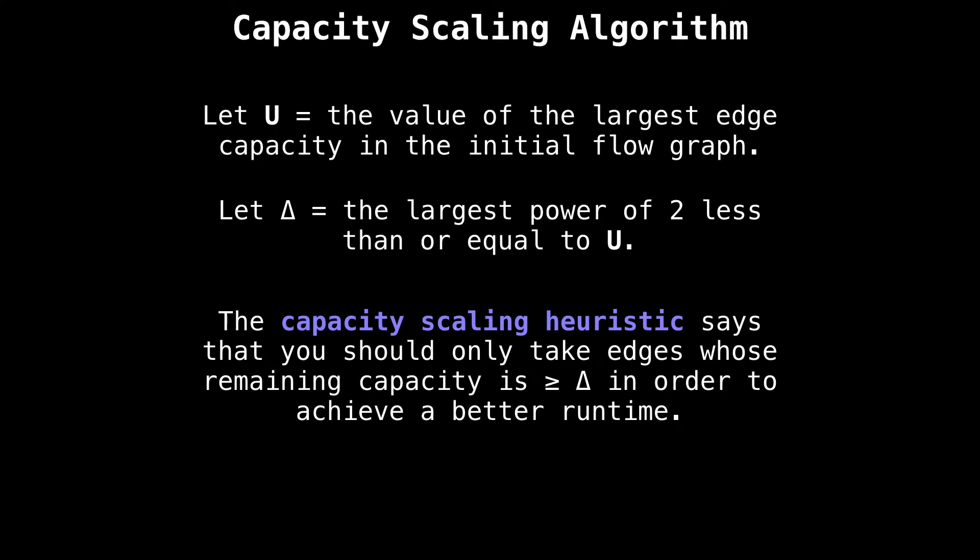The capacity scaling algorithm is pretty straightforward. But first, we need to define two variables that we will need. Let U equal the value of the largest edge capacity in the initial flow graph. And also let delta be the largest power of two, which is less than or equal to the value U.